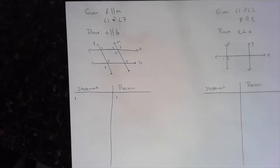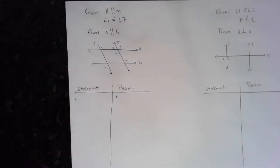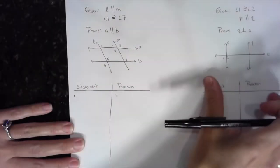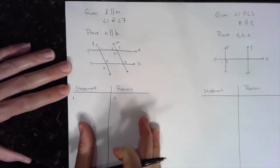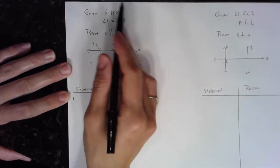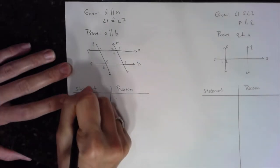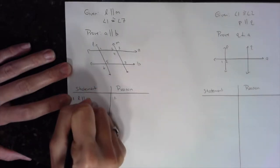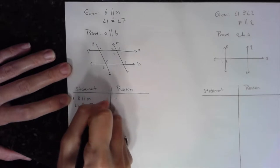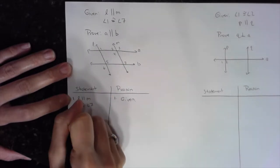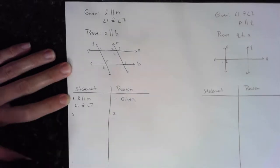Every statement I make has to have a reason. You should assume you're talking to somebody that knows nothing — they don't know what the symbols mean, they don't know anything. You have to walk them through each step. With the two-column proof, the first statement is always what's given: L is parallel to M, angle one is congruent to angle seven, and the reason is 'given.' Always start with what's given, then work from there.